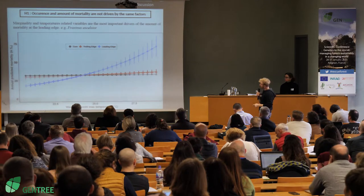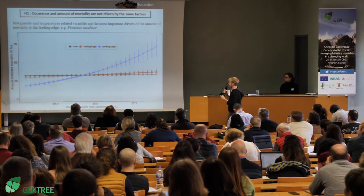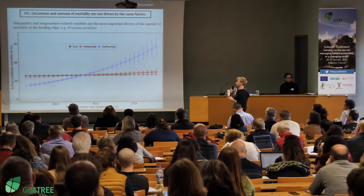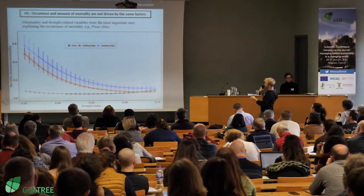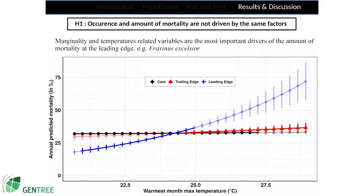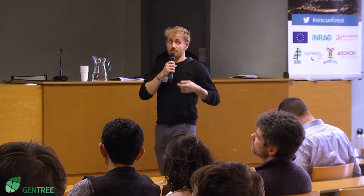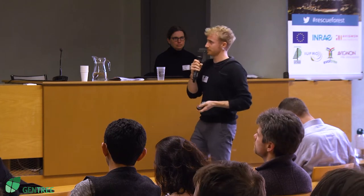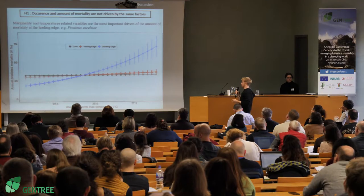When we look at the impact of temperatures on the amount of mortality — this is for Fraxinus excelsior — the main tendency was that the main driver of the amount of mortality was temperatures, especially at the leading edge. And it was a mixture of all the variables at the trailing edge population — sometimes competition, sometimes drought, sometimes temperature — so no clear pattern.